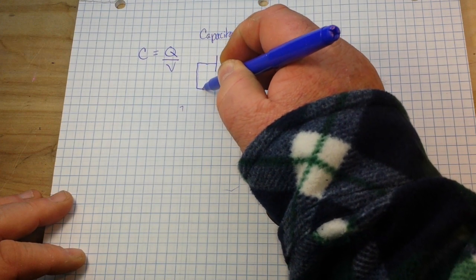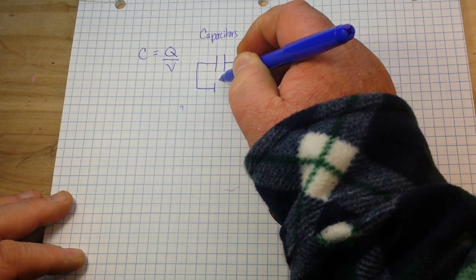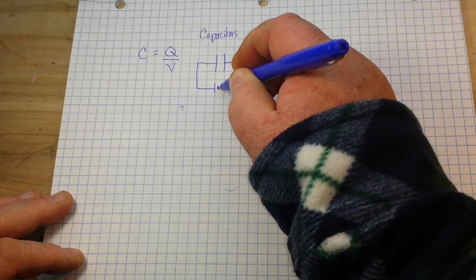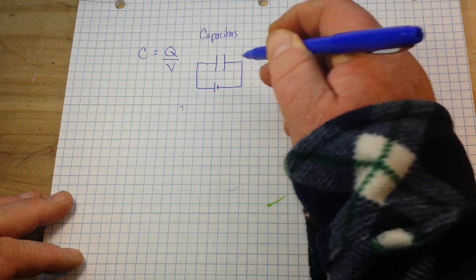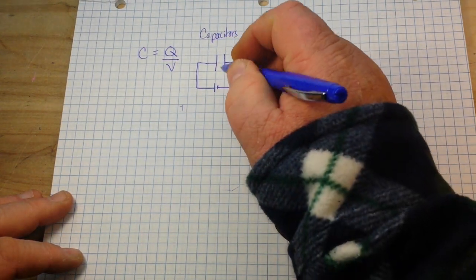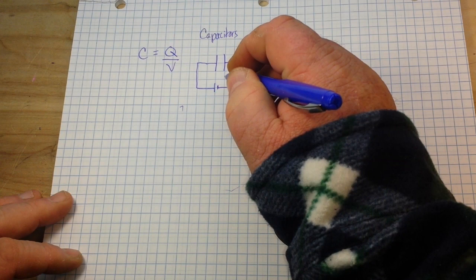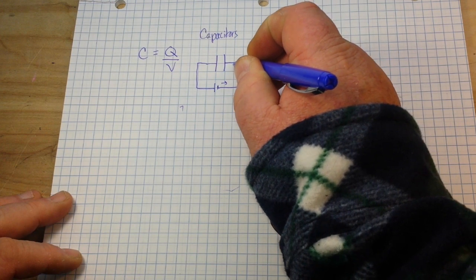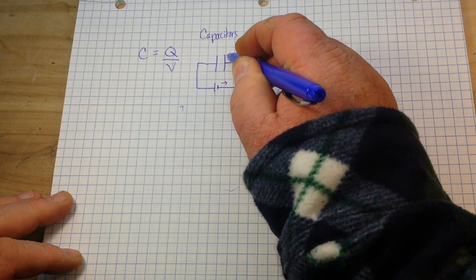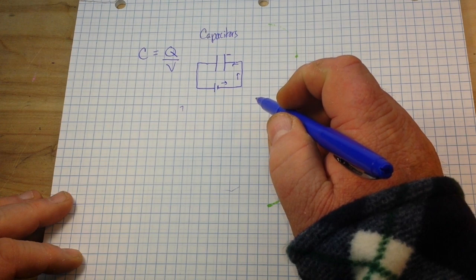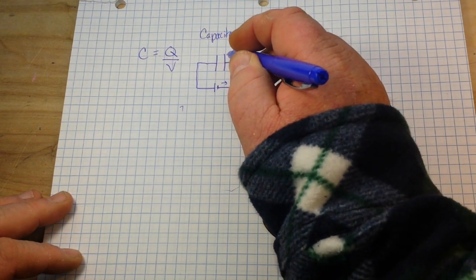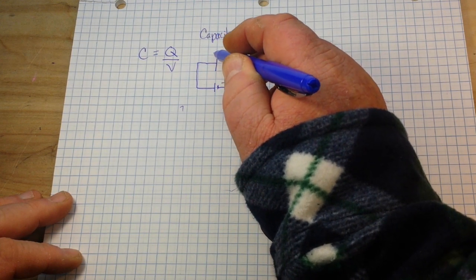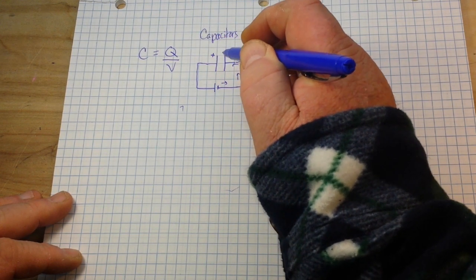Now, if we connect our capacitor up to a battery, what happens? Well, if we're talking about electron flow, then negatively charged electrons will flow in this direction and put a negative charge on this plate. That negative charge on this plate will repel electrons on this plate, creating a positive charge.